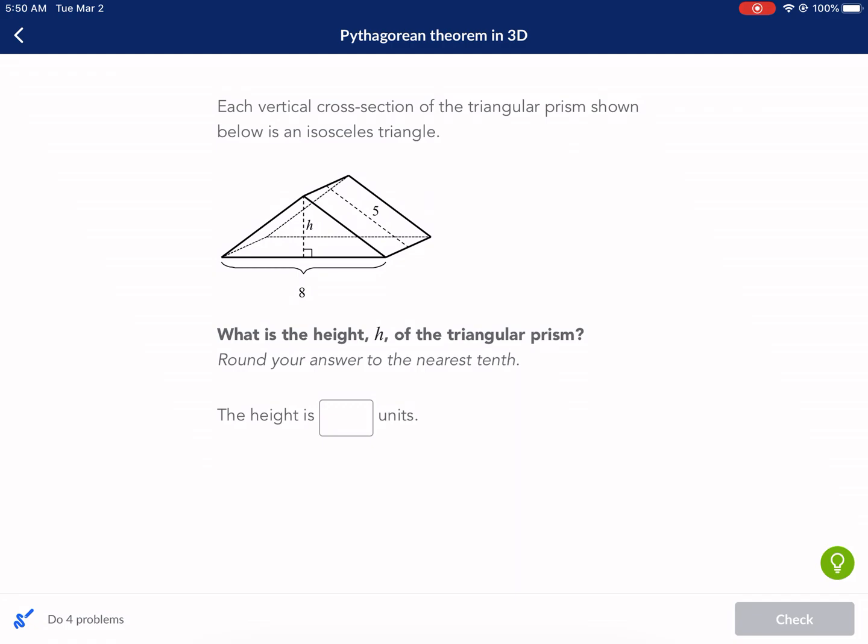Each vertical cross-section of the triangular prism shown below is an isosceles triangle. What is the height h of the triangular prism? Round your answer to the nearest tenth. The height is blank units. Okay, so that's what we have to do here.